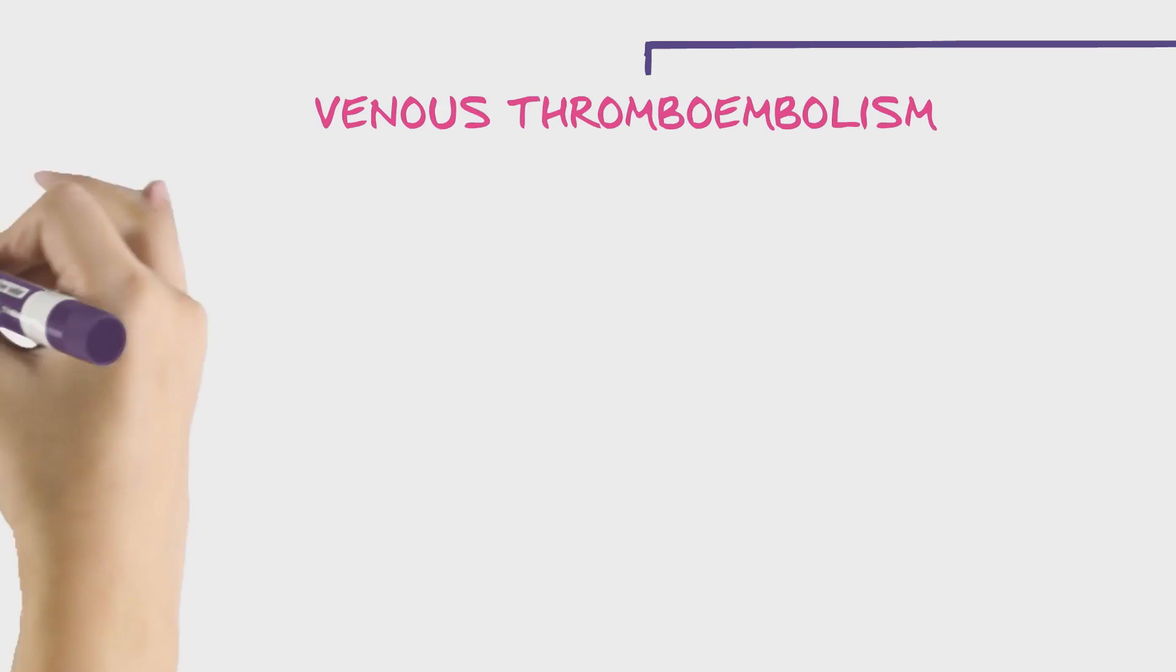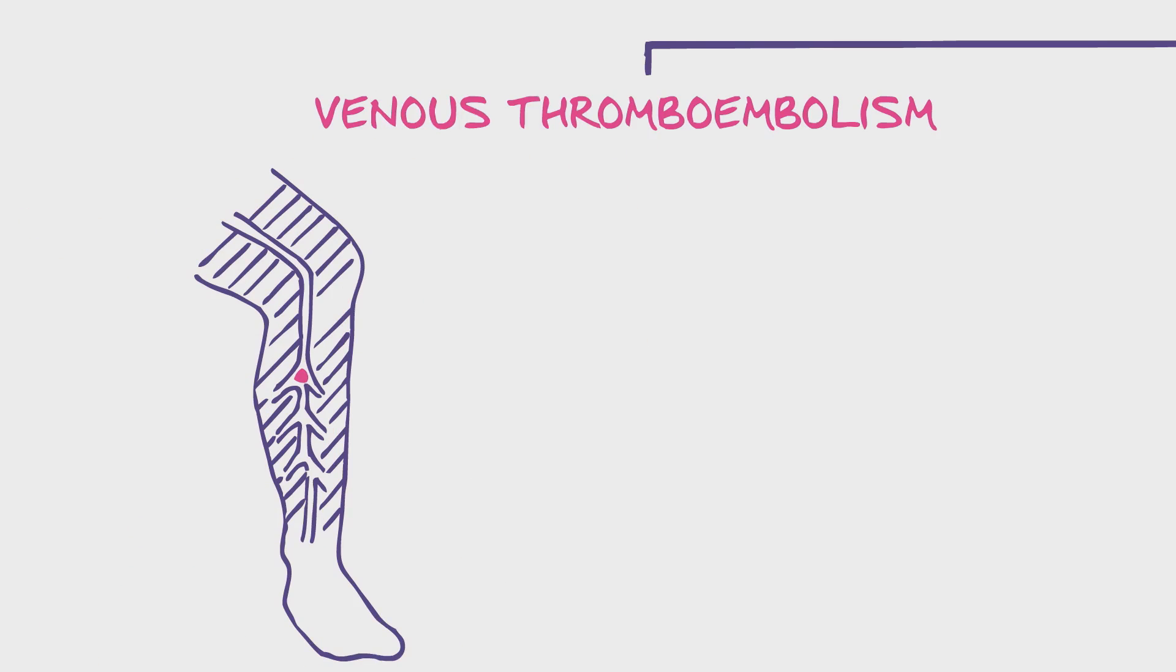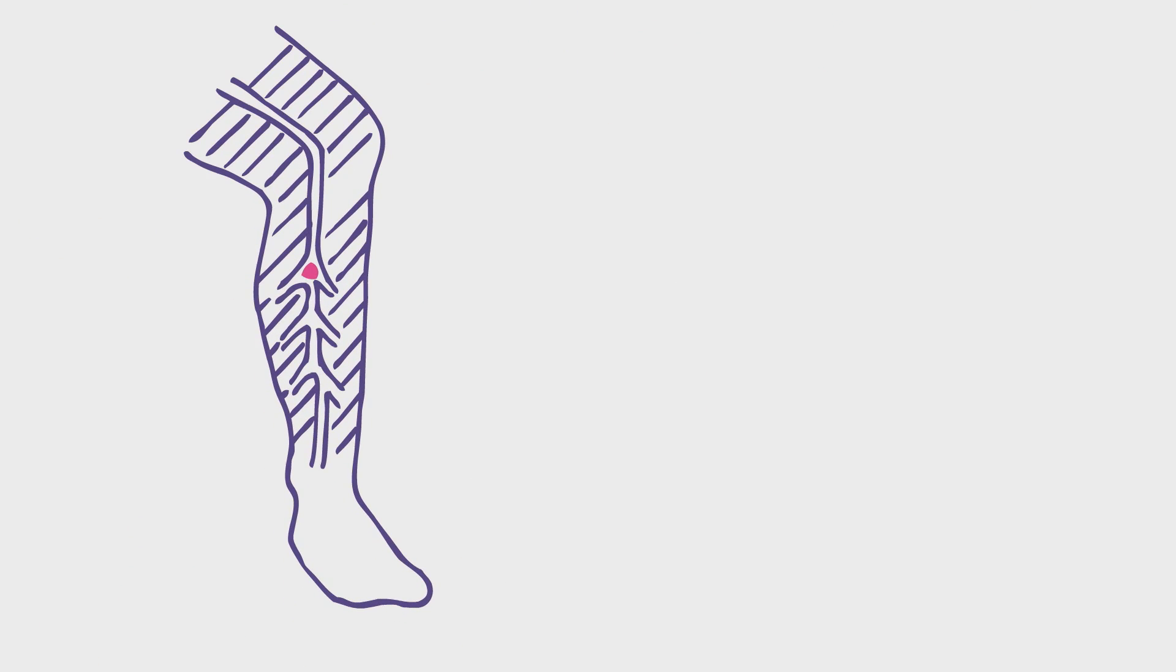In venous thromboembolism, a blood clot forms in a vein, usually deep inside the leg. The clot can cause swelling and pain.